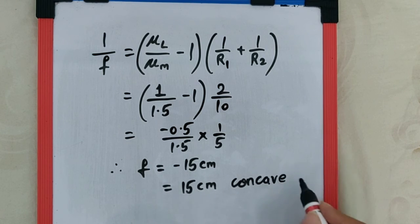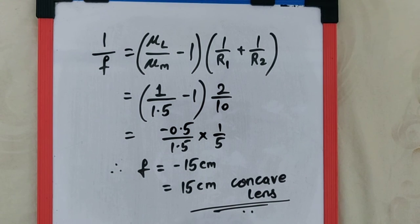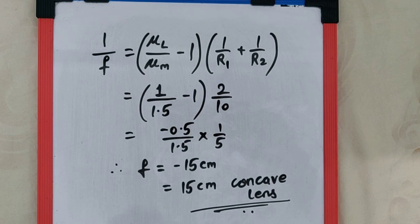Though the shape is convex, due to the change of refractive index, it behaves like a concave lens.